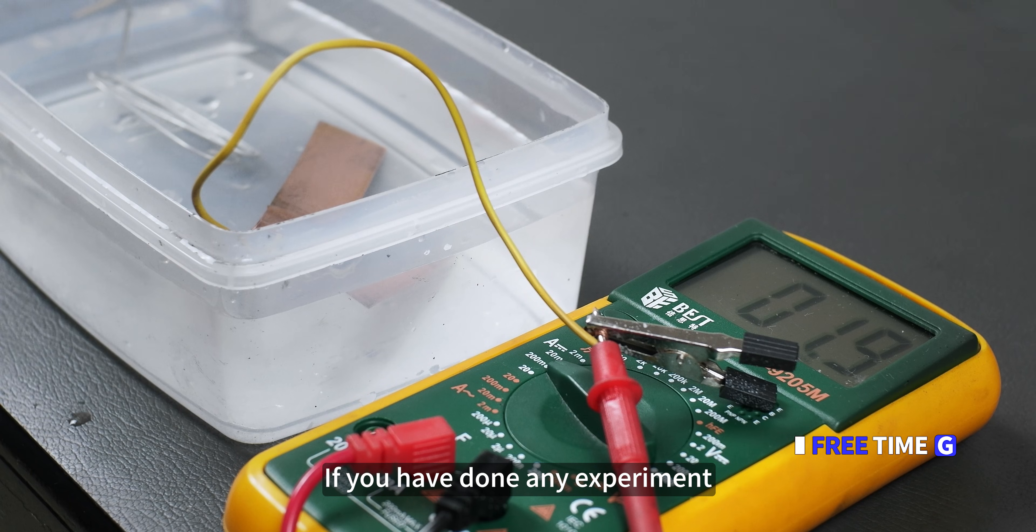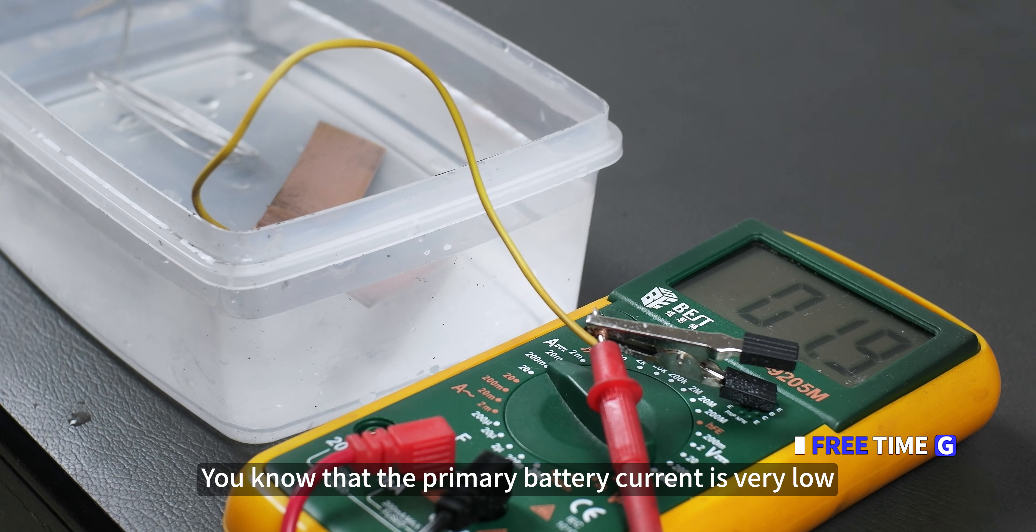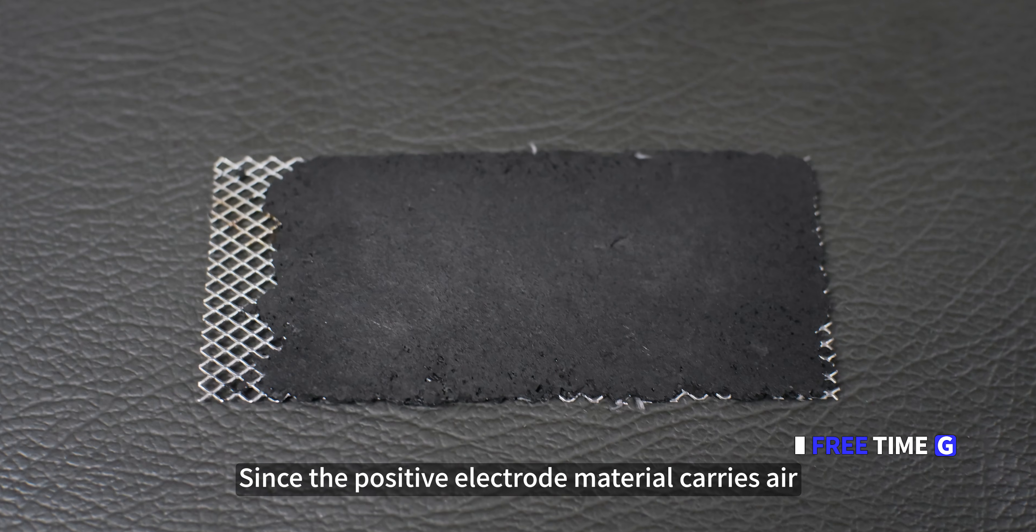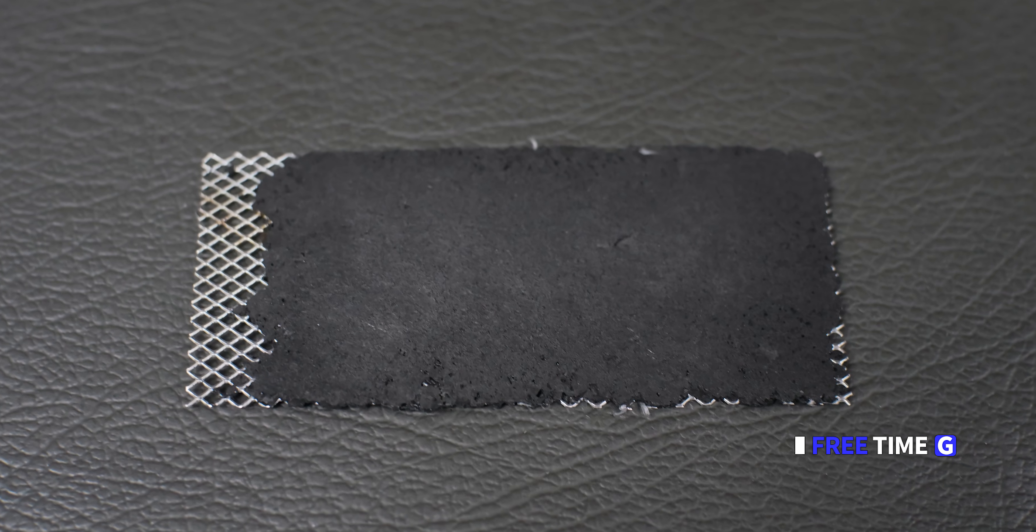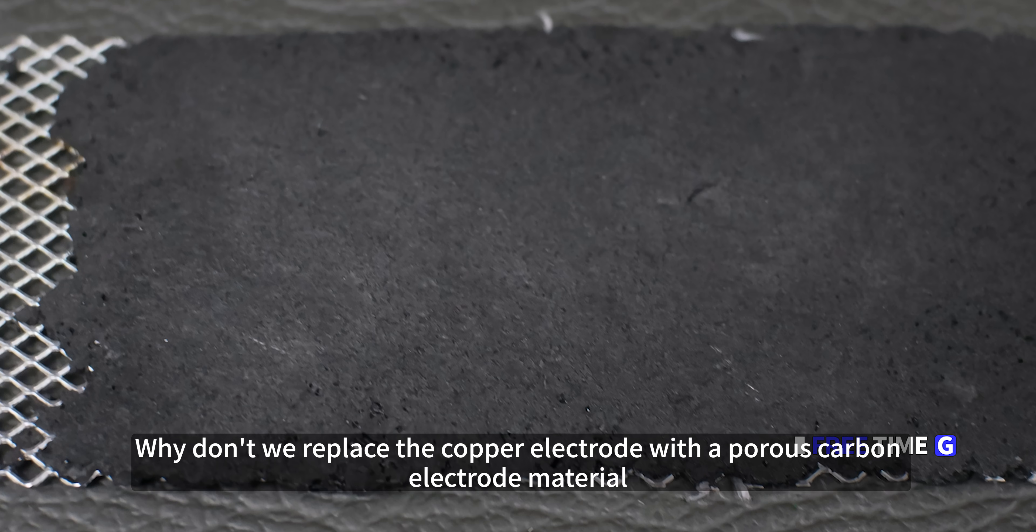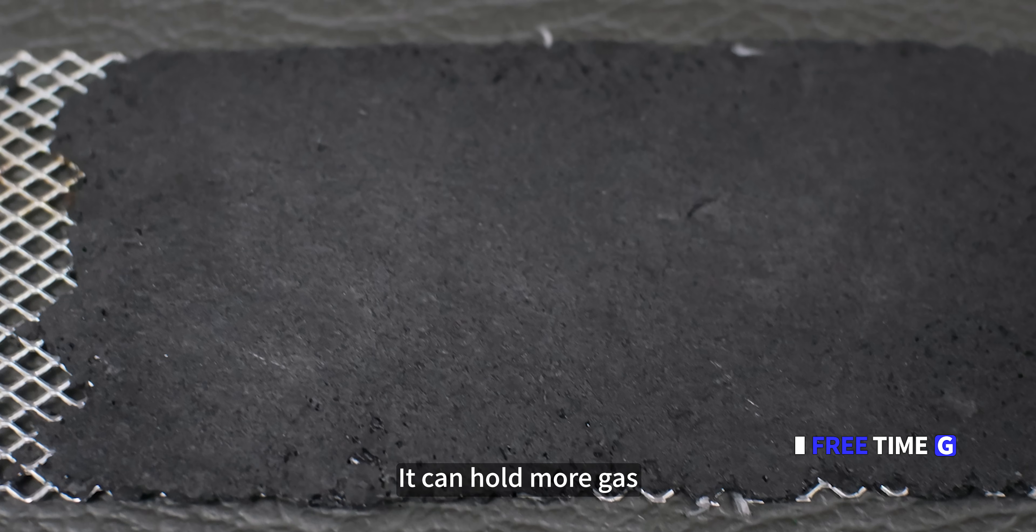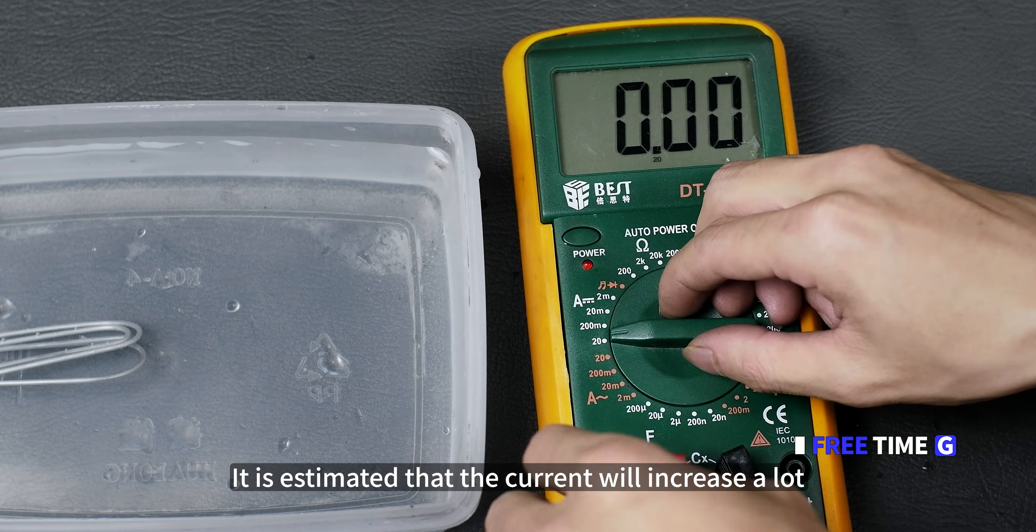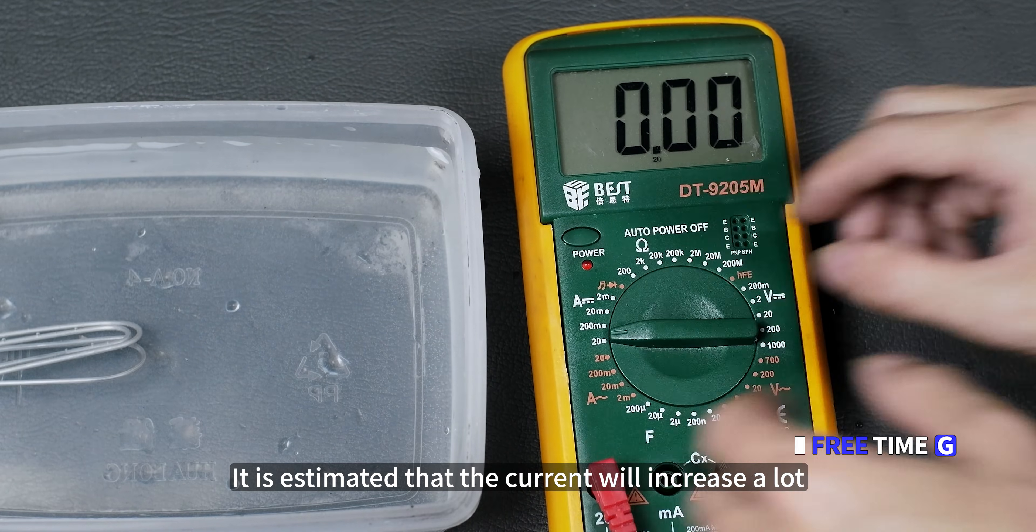If you have done any experiment, you know that the primary battery current is very low. Moreover, the current is unstable. Since the positive electrode material carries air, it can increase the output power. When we replace the copper electrode with the porous carbon electrode material, it can hold more gas. Let's go directly to the air electrode direction.